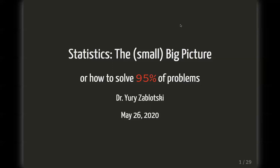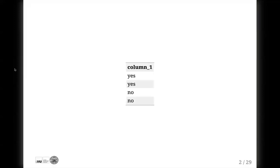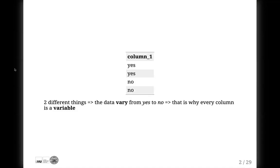In this first lecture we'll have a look at a simple table of a maximum 10 observations with some basic data patterns and figure out what we can do about them. Let's start with the smallest possible example. What do we see here? We see one column of data with two different things in it. Since it is not one thing but two, the data vary from yes to no. This is why every column in your Excel sheet is called a variable.